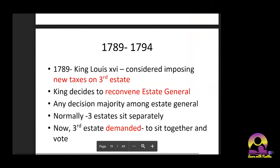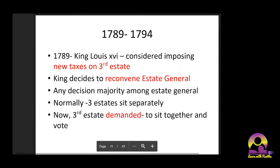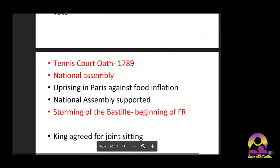After the Tennis Court Oath in 1789, the Third Estate renamed itself the National Assembly. At the same time, there was an uprising in Paris over food inflation, and the National Assembly supported this uprising. It turned out to be a very violent clash.